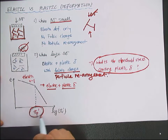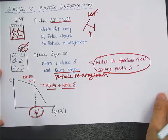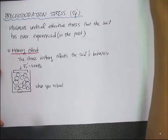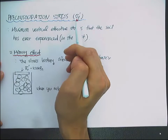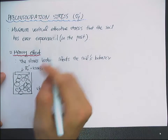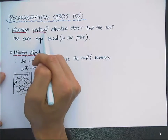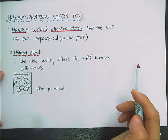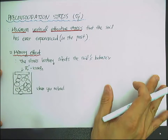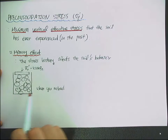It is called the pre-consolidation stress sigma V prime. The pre-consolidation stress sigma V prime is defined as the maximum vertical effective stress that the soil has ever experienced in the past. Because the soil has a memory effect, stress history affects the soil's behavior.